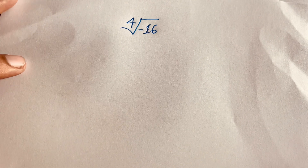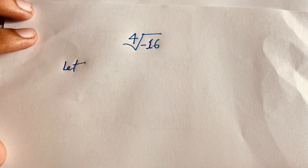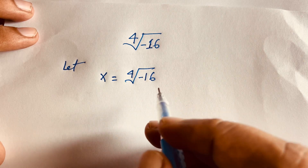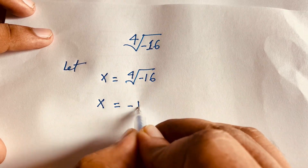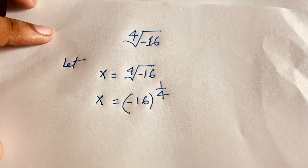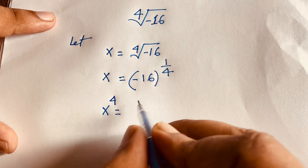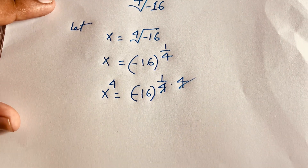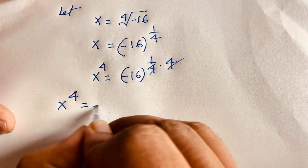Now I solve this question using another method. Let x = ⁴√(-16), so x⁴ = -16. Raising both sides to the power 4 gives x⁴ = -16, which is our exponential equation: x⁴ = -16.